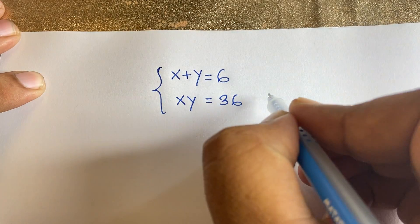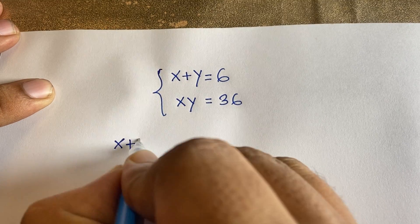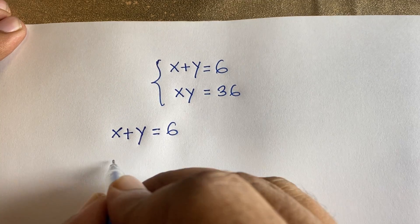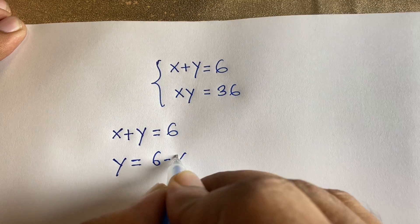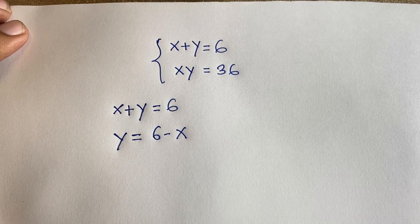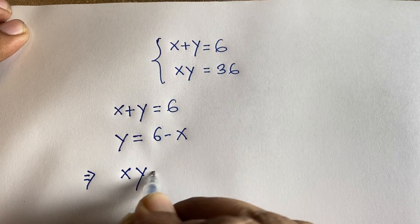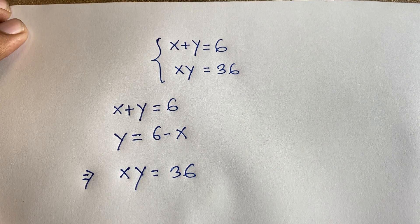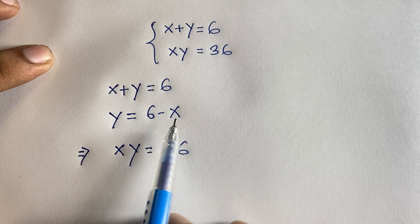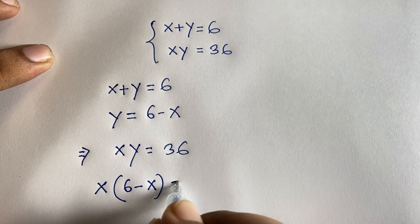This is our first equation: x plus y is equal to 6. From this, y is equal to 6 minus x, because we move x to the right side. Our second equation is x times y is equal to 36. Now I can substitute y equals 6 minus x into this equation.